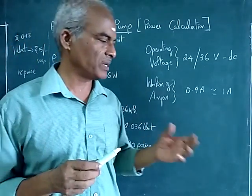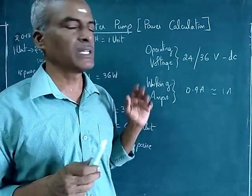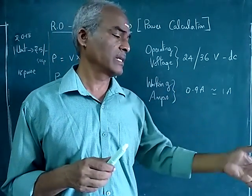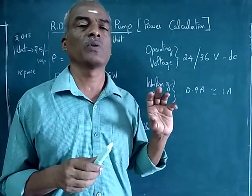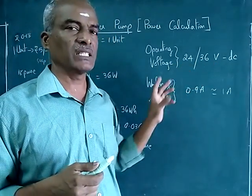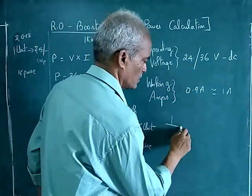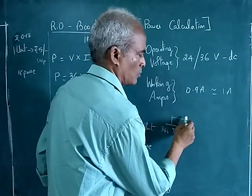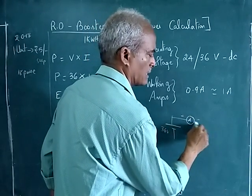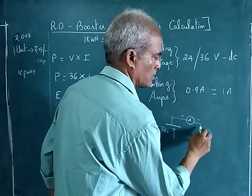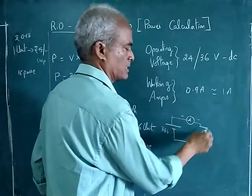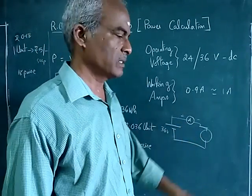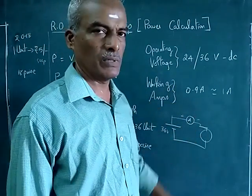But when you want to actually find out, you should connect—you must connect the 36 volts DC, then you must connect a meter, and assume this is the motor, plus-minus, and you should see the current. That will be the current value. But based on the plate details, I have calculated these values.